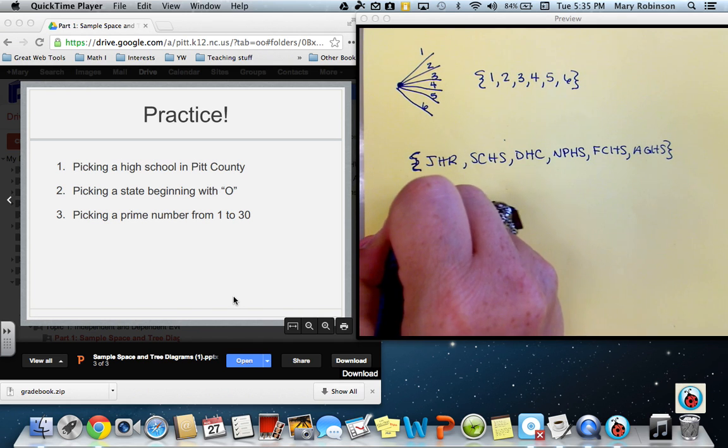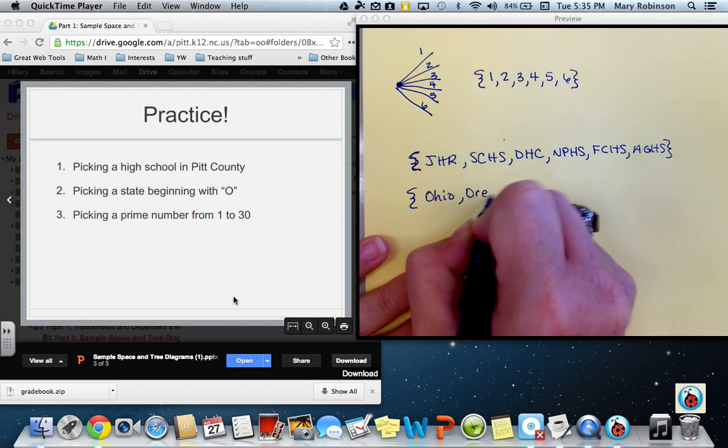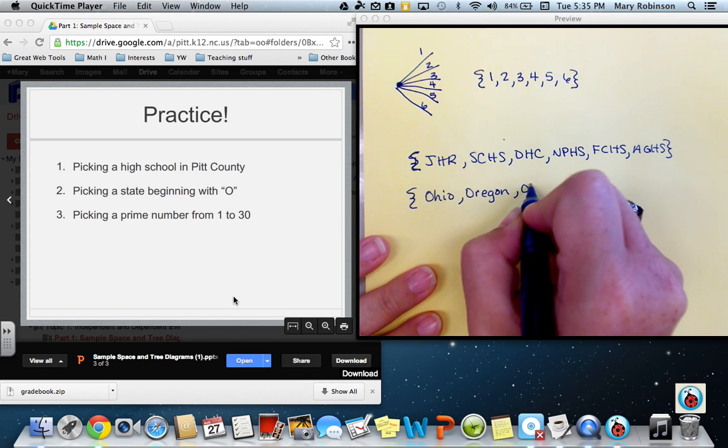Next, states beginning with O: Ohio, Oregon, and Oklahoma.